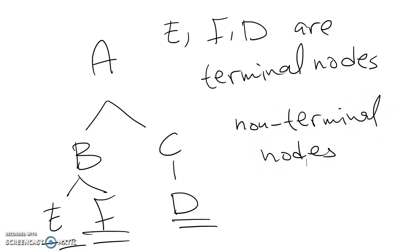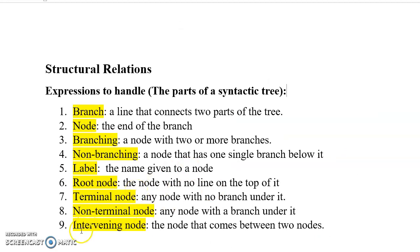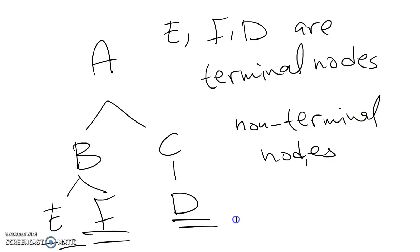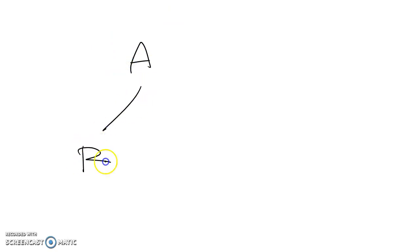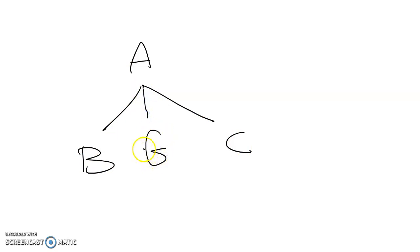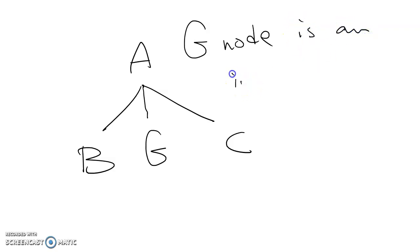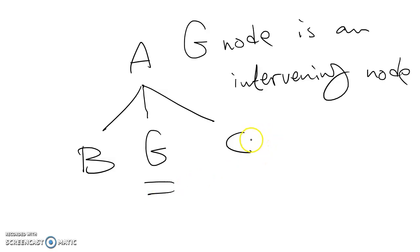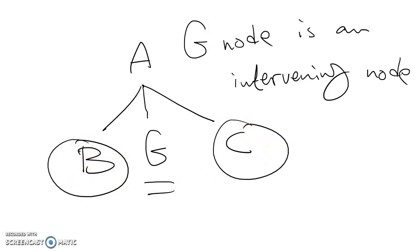The last expression here is something called intervening node, which is very important in structural relations, especially in C-command. Suppose we have a tree with nodes B and C, and in the middle we have a node G. An intervening node means the node that comes between two nodes — so G is an intervening node, meaning it comes in between these two nodes.